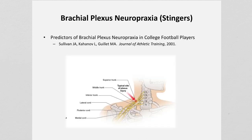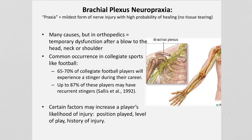Our next pathology is a brachial plexus neuropraxia — also called a stinger or burner. There are many predictors of brachial plexus neuropraxia in college football players, including player position, level of play, and history of prior injury. The more often a site has been injured, the greater the risk of developing brachial plexus neuropraxia.